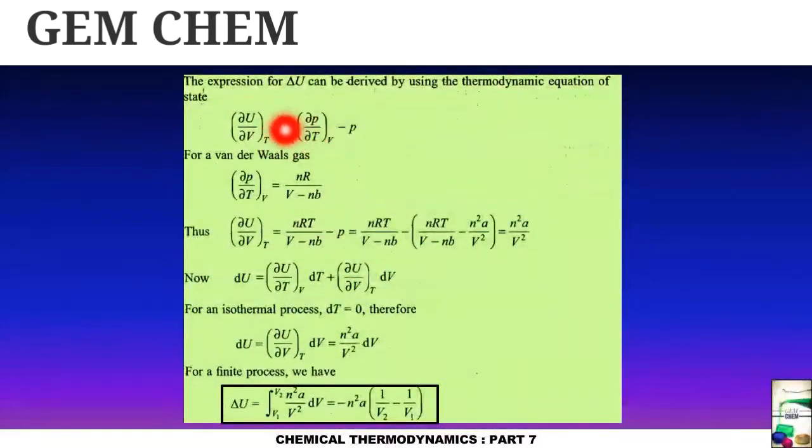Here we can see the expression of delta U can be derived by using thermodynamic equations and we have already done it, how to derive it. Now for Van der Waals gas, this delta p by delta T at constant V is given by nR by V minus nb. So we just substitute this value here and we get this expression.